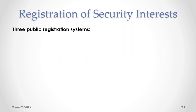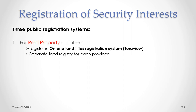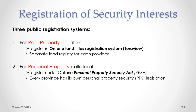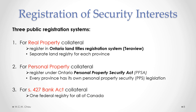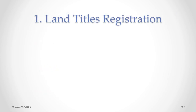There are three public systems for the registration of security interests. Where the collateral involves real property in Ontario, there's a land titles registration system called Terraview, and each province has its own separate land registry. Where the collateral involves personal property, there's a registry under the Ontario Personal Property Security Act, or PPSA, and every province has its own PPSA legislation. Where the collateral involves a security interest under Section 427 of the Bank Act, there is one federal registry that applies to all of Canada.